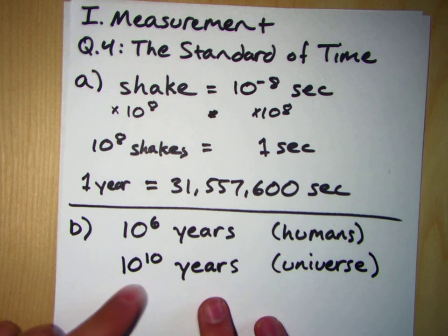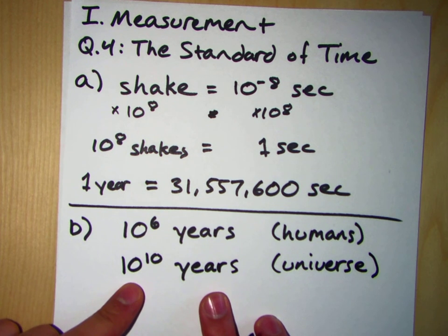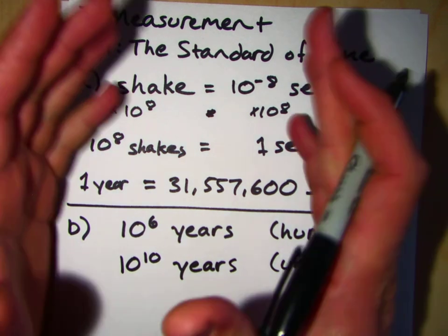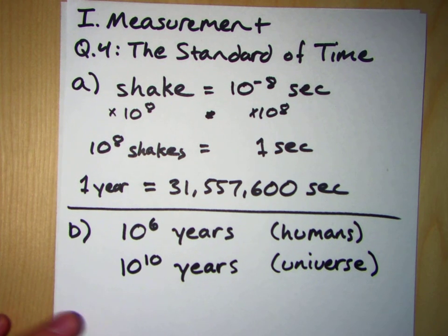So the question is, if we took the life of the universe, the lifespan of the universe so far, we shrunk it down to the length of a day, how many seconds have humans been around? Well, okay, let's take a look at this.